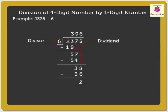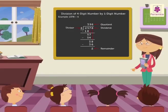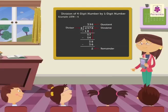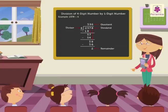So, here we got the quotient as 396 and the remainder as 2. Hope it was fun revising division of 2, 3 and 4-digit numbers by 1-digit number.